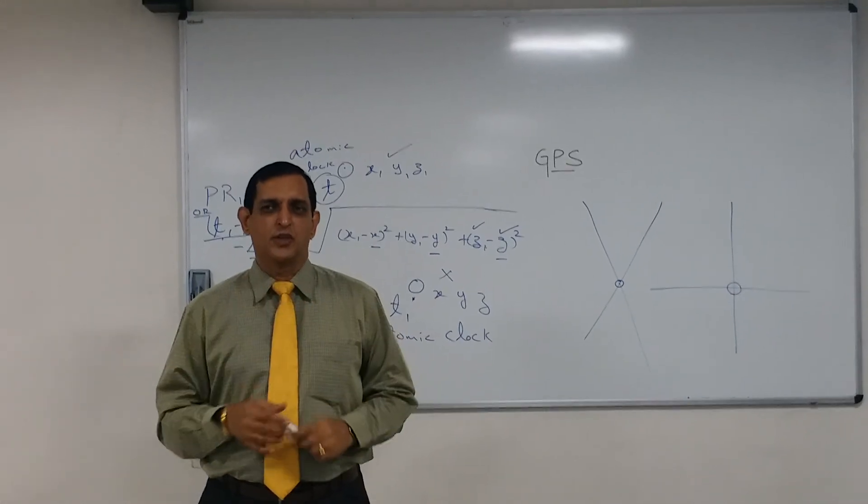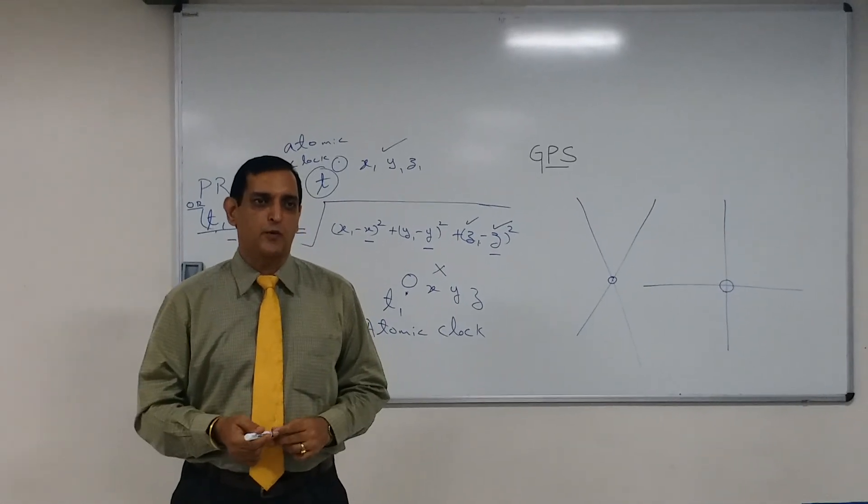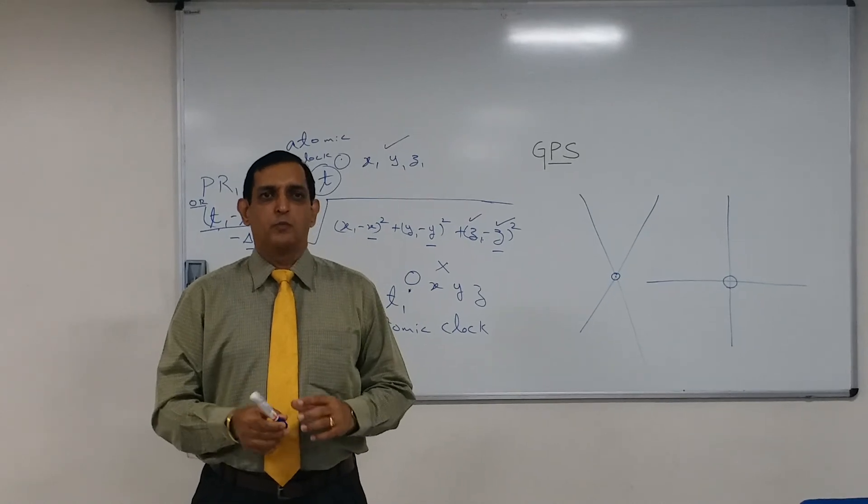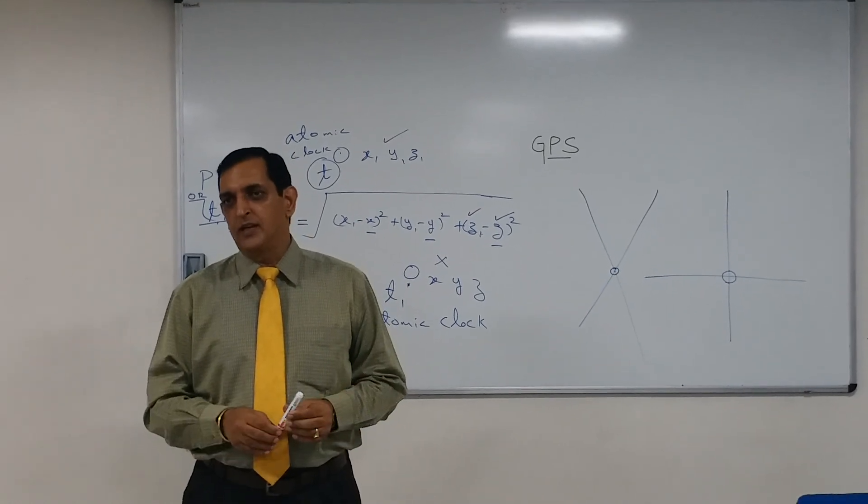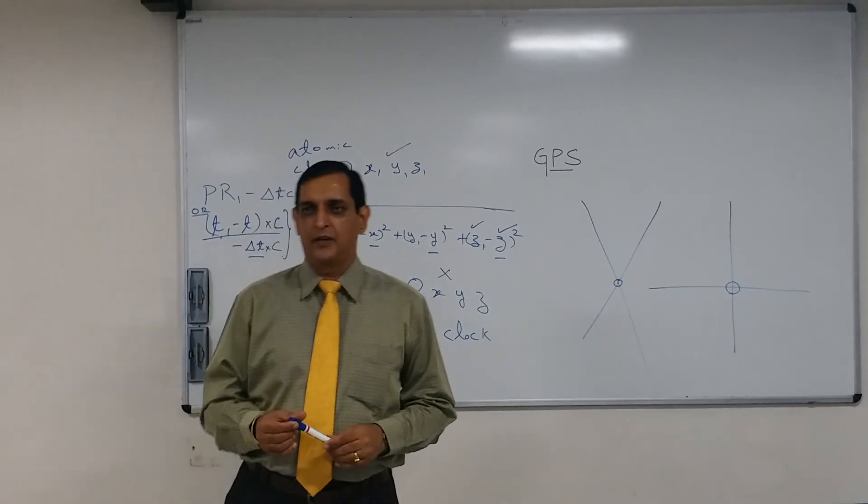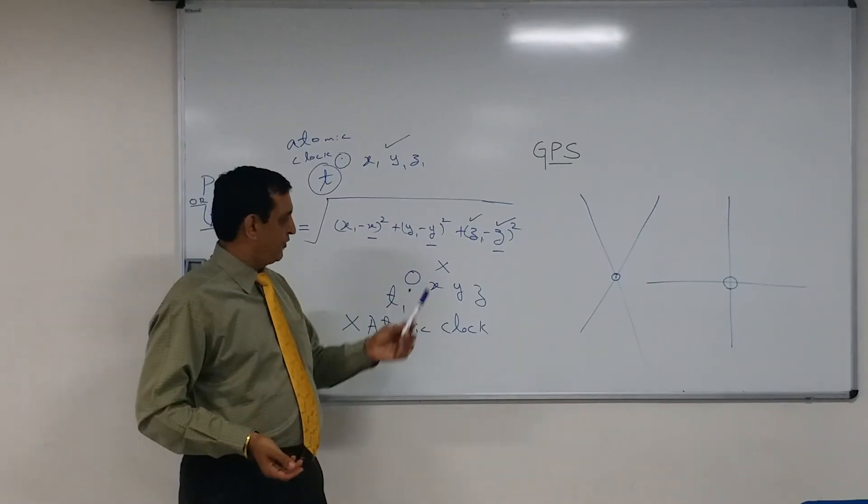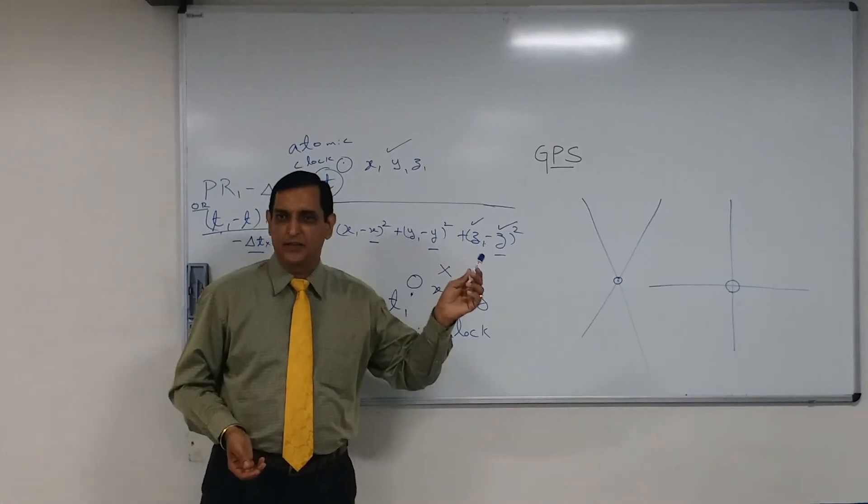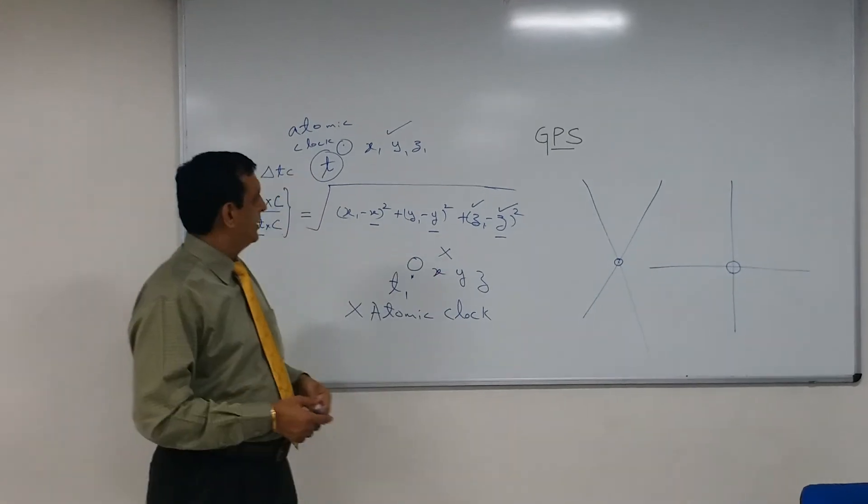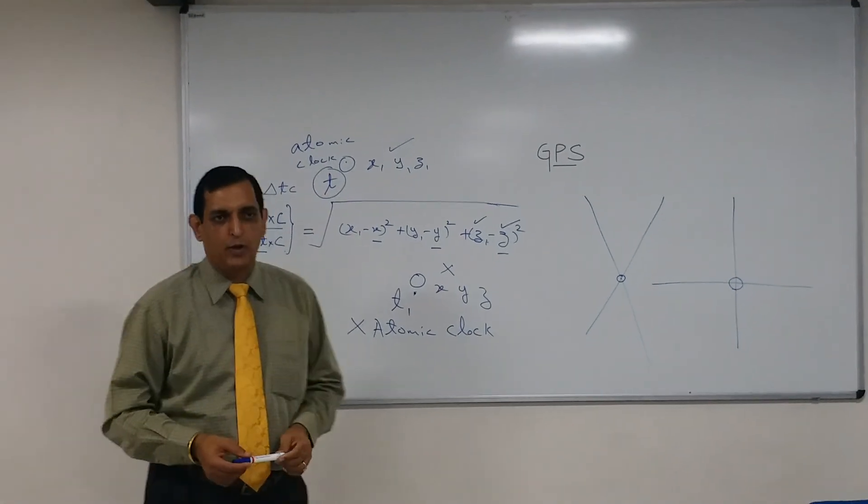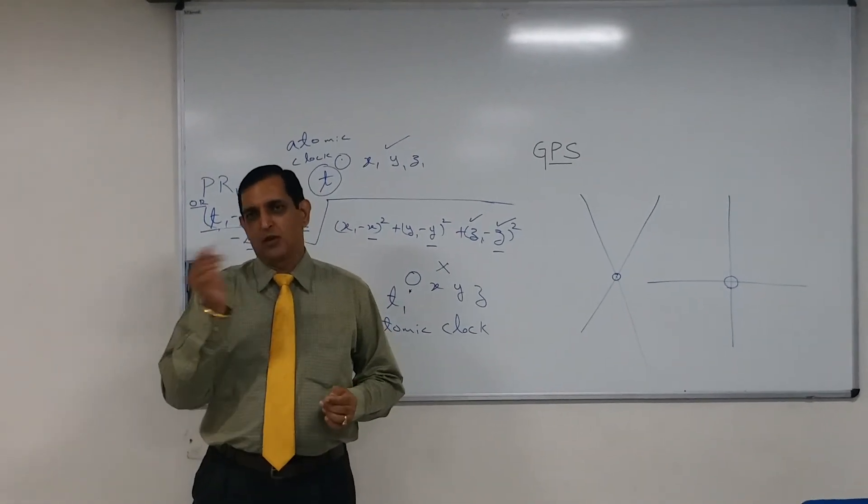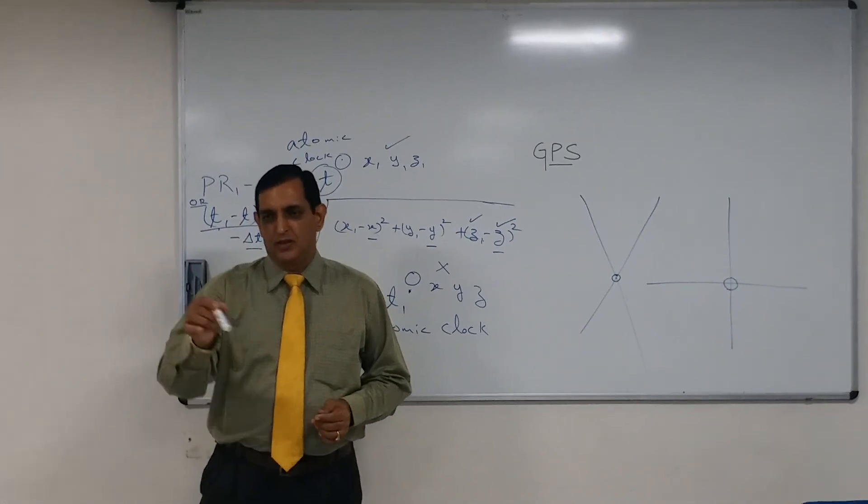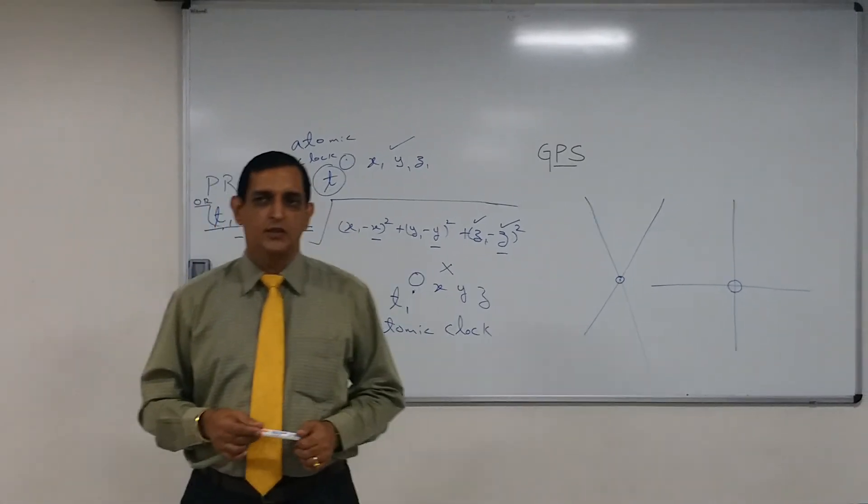So, there can be some variation in the path, though it is all this is predicted very accurately. However, prediction is a prediction, it cannot be absolutely accurate. And in terms of atomic clocks, we are talking of 1 into 10 raised to minus 11 as I told you, being the accuracy of the atomic clock. So, obviously, there will be some deviation, that is what is deviation from the predicted path.